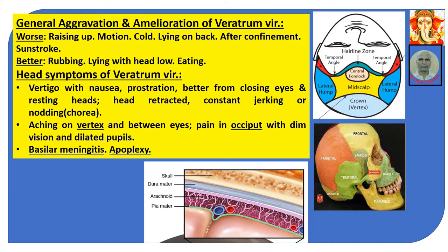The vertex and occiput portions of the skull are demonstrated. The skull is composed of many bones: frontal bone, sphenoid bone, parietal bone, temporal bone, maxilla, zygomatic. The occipital portion is at the back of the skull.